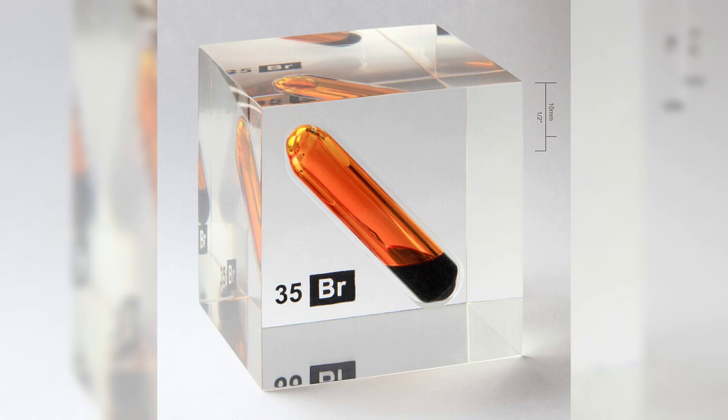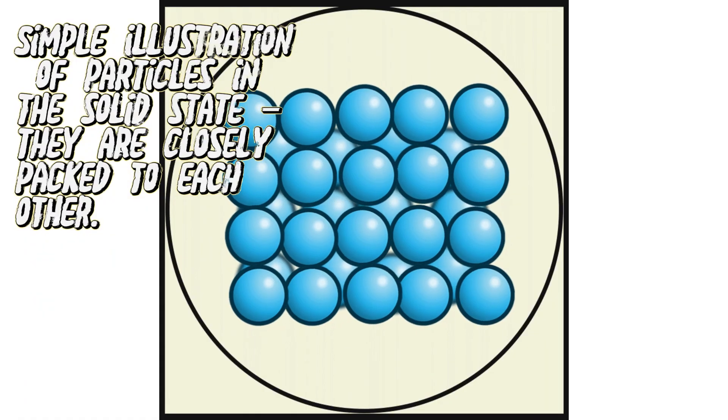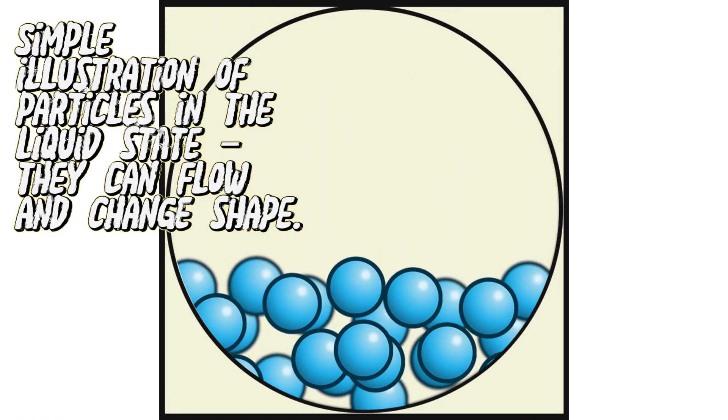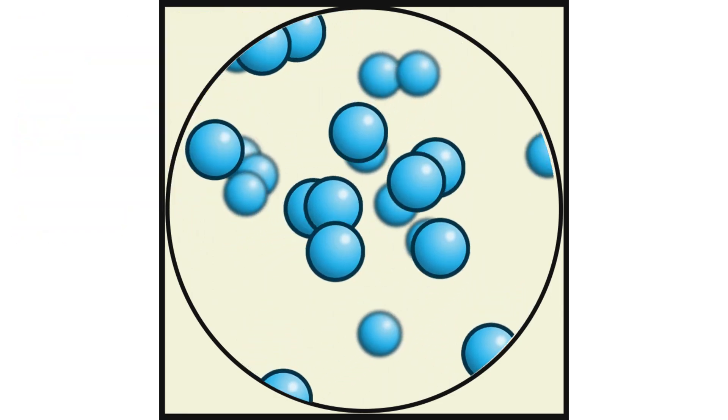In physics, a state of matter is one of the distinct forms in which matter can exist. Four states of matter are observable in everyday life: solid, liquid, gas, and plasma.